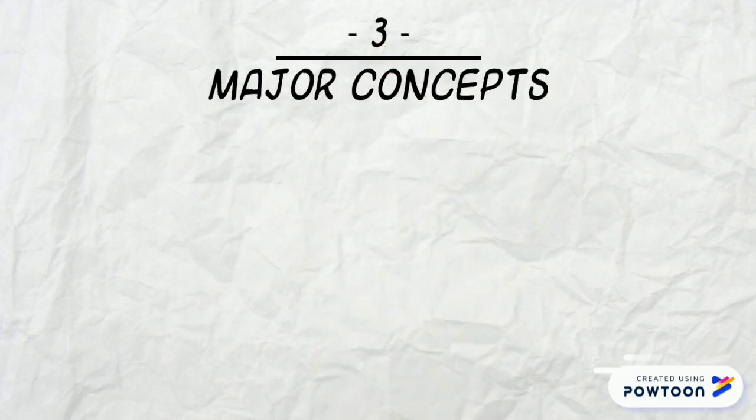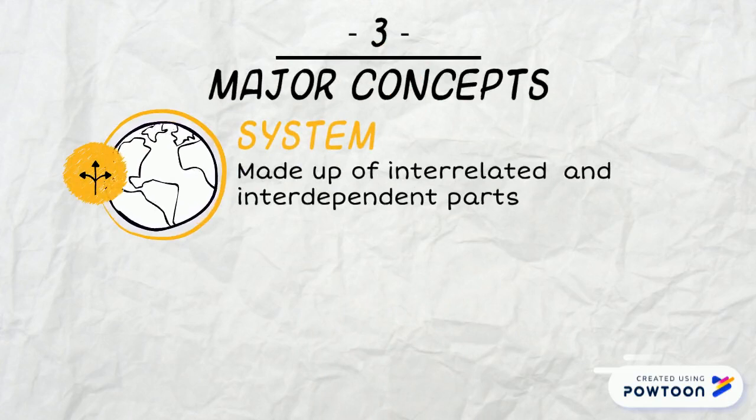These are the major concepts of General Systems Theory. System: it is an entity made up of interrelated, interdependent parts.